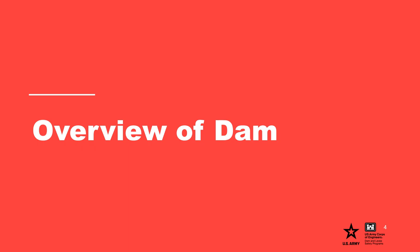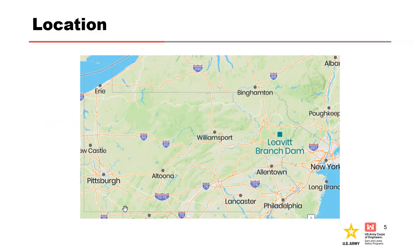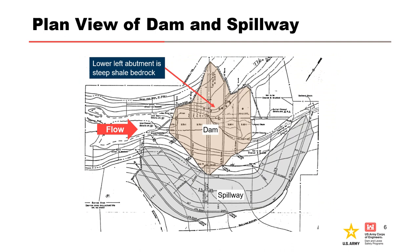First, an overview of the dam. U.S. Soil Conservation Service, now NRCS, dam PA-463 Broadhead Dam, also known as Levitt Branch Dam, is located in north central Pennsylvania in Monroe County. The project is a dry dam that helps regulate the flow of the Levitt Branch, one of the headwaters of Broadhead Creek, and impounds 1,544 acre-feet.